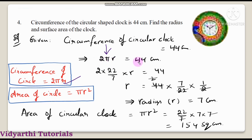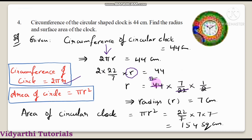Substituting pi as 22 by 7: 2 into 22 by 7 into r equals 44. Transposing the other terms, r equals 44 into 7 by 22 into 1 by 2. Cancelling — 22 twos are 44, and 2 also cancels — we get 7 into 1, so radius r is equal to 7 centimeters.